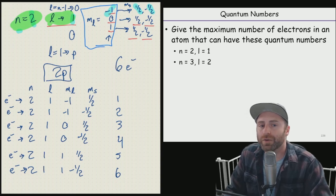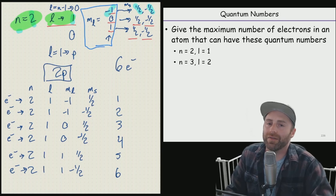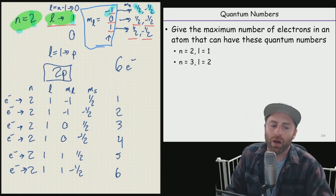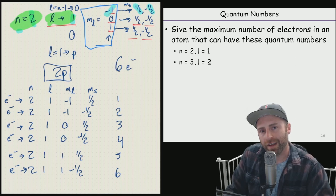So N is equal to three, cool. What letter designation should we give if L is equal to two? And then how many possible orbitals can we have if L is equal to two? Hopefully that example makes sense. Please let me know if you have any questions and thanks for watching.